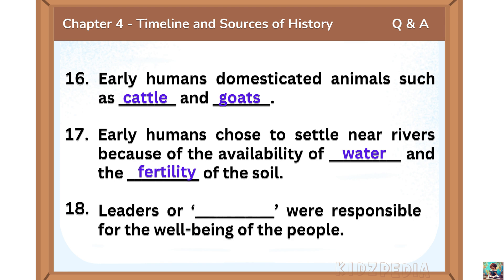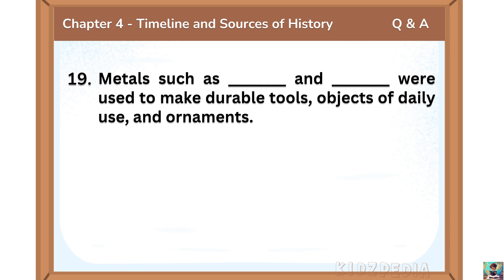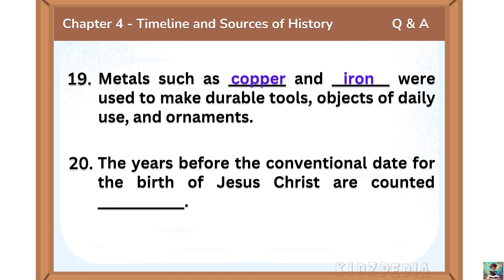Leaders or chieftains were responsible for the well-being of the people. Metals such as copper and iron were used to make durable tools, objects of daily use and ornaments. The years before the conventional date for the birth of Jesus Christ are counted backwards.